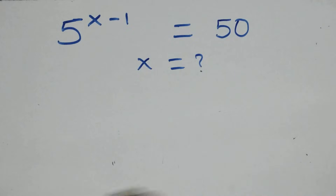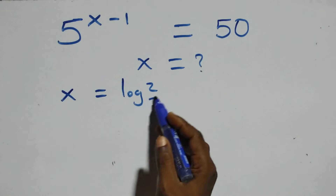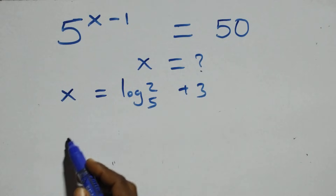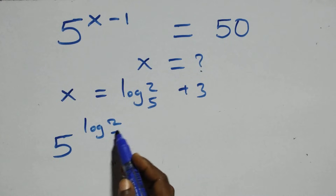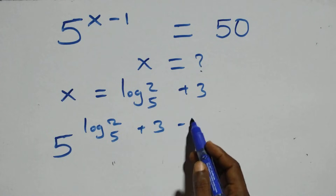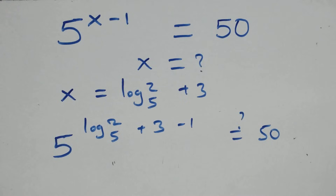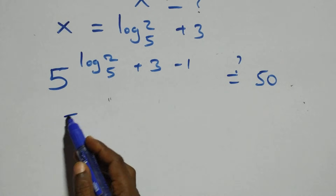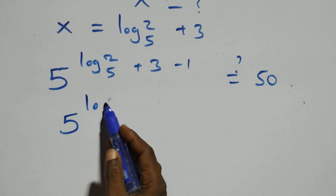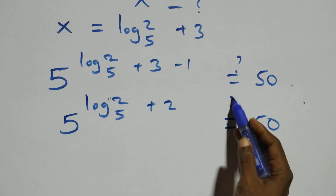We verify by substituting x equals log₅2 plus 3 back into the original expression. We get 5 raised to power (log₅2 plus 3 minus 1), which is 5 raised to power (log₅2 plus 2), and this should equal 50.